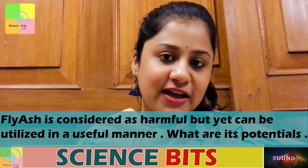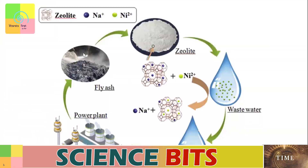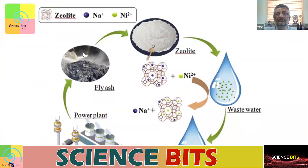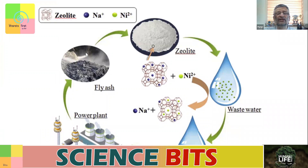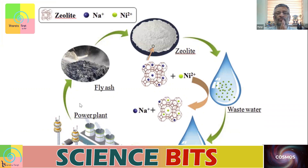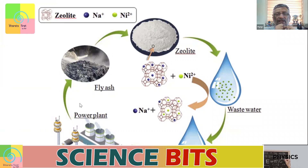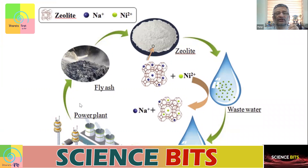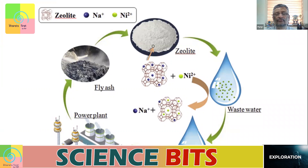So let's first understand what fly ash is. Fly ash is mostly produced in a coal-fired power plant. When you burn coal and it completely combusts, what results is called fly ash.